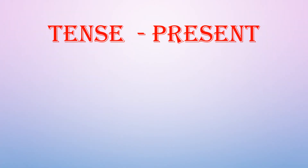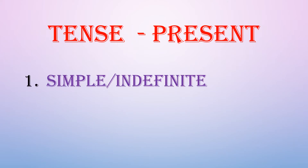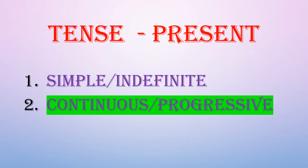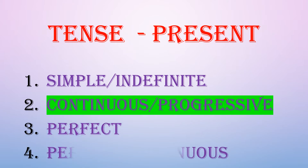The present tense can be further divided into four types. First is simple or indefinite tense, which we have already discussed in our previous video. In this video, we are going to discuss about the continuous tense, also known as the progressive tense. Third is perfect tense and fourth is perfect continuous tense.